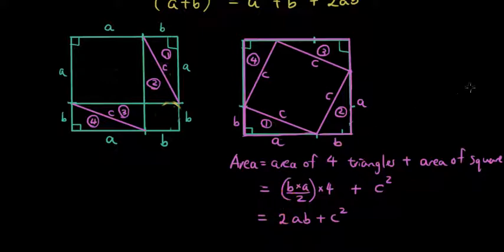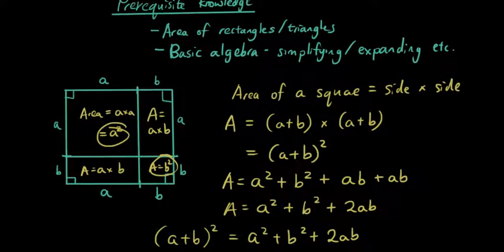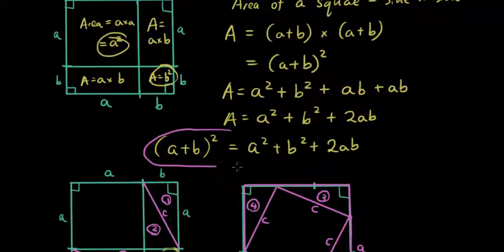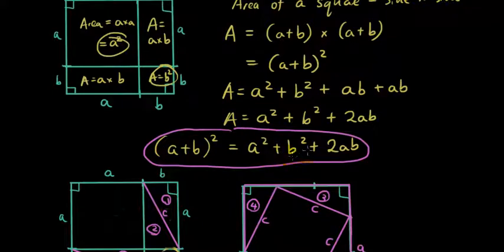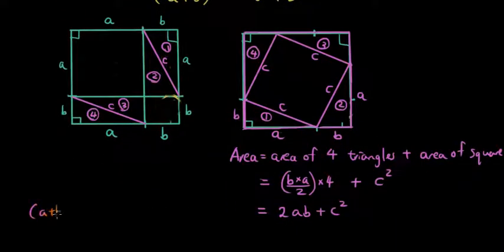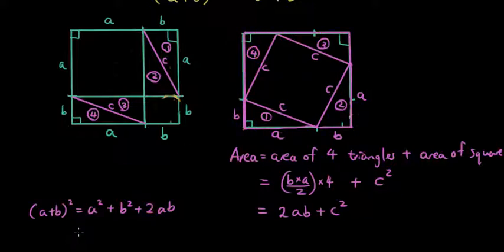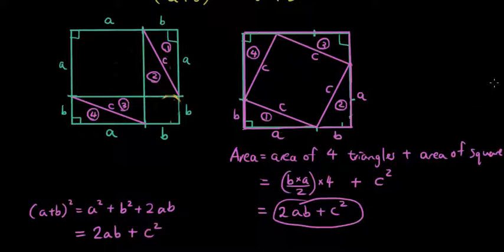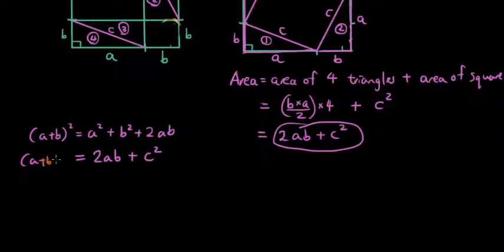Now let's compare the two expressions for the area of the square. The first one we got was A plus B squared equals A squared plus B squared plus 2AB. In this same size square, I also have the formula 2AB plus C squared. So if A plus B squared equals A squared plus B squared plus 2AB, and it is also equal to 2AB plus C squared, then these two expressions must be equal.